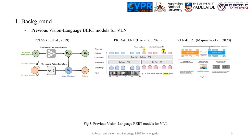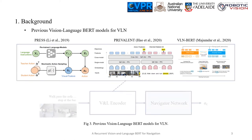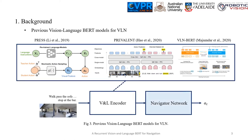Previous work such as PRESS, Prevalent, and VLN BERT have leveraged powerful pre-trained language transformers in VLN. However, they only apply the transformer for encoding the textual visual features, and still need to train a navigator network from scratch for navigation.